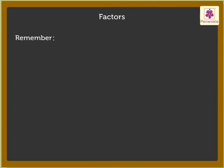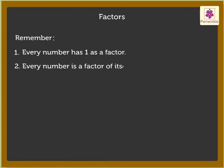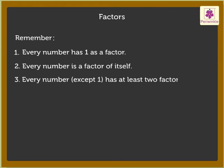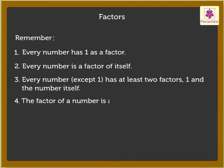Remember, every number has 1 as a factor. Every number is a factor of itself. Thus, every number except 1 has at least two factors: 1 and the number itself. The factor of a number is always equal to or less than the number.